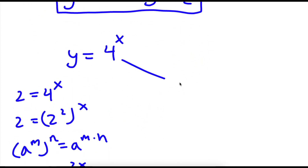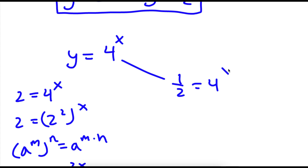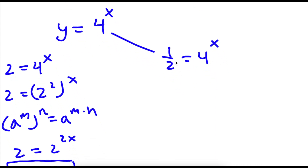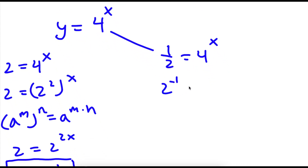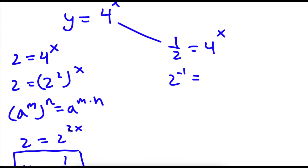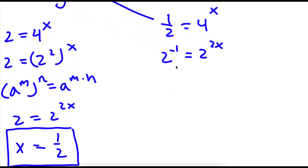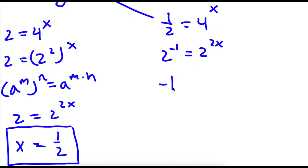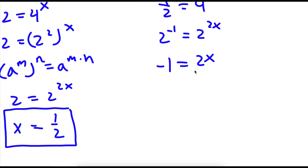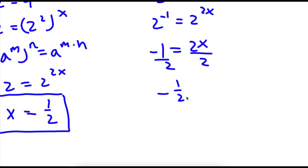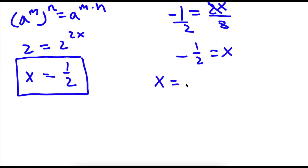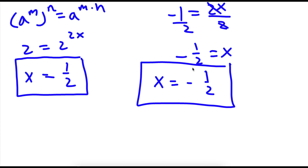For y equals 1 half: 1 half equals 4 to the power of x. Now 1 half is the same as 2 to the power of negative 1, and 4 to the power of x is 2 to the power of 2x. So 2 to the power of negative 1 equals 2 to the power of 2x, meaning negative 1 equals 2x. Dividing both sides by 2 gives x equals negative 1 half. So my two solutions are x equals 1 half and x equals negative 1 half.